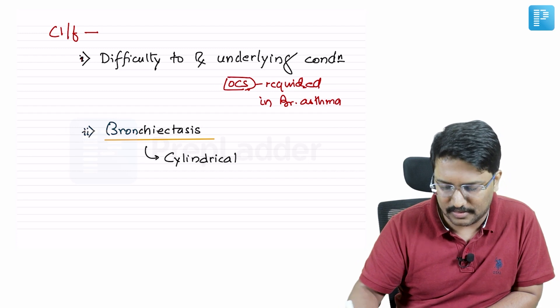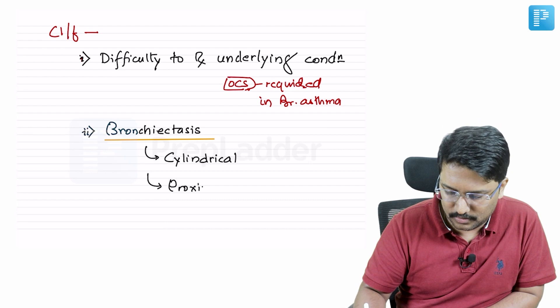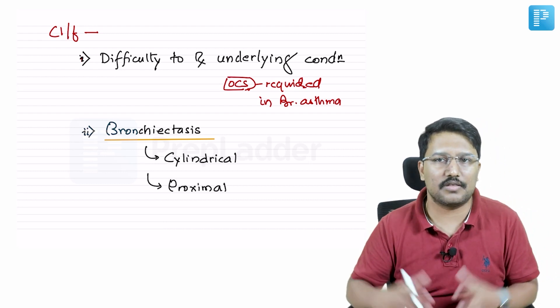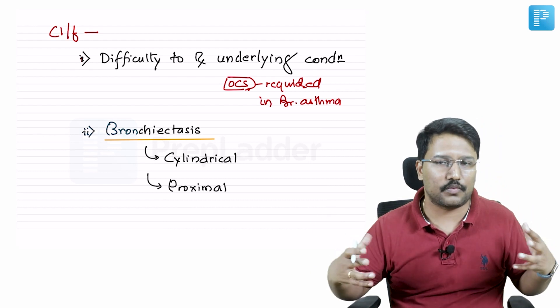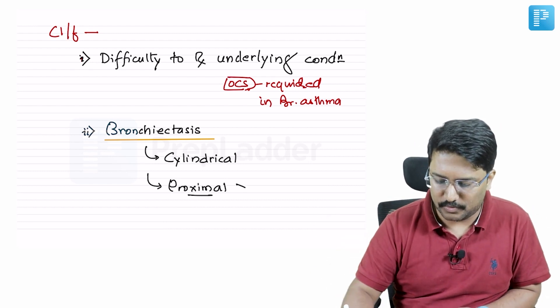It is mostly proximal or central more than peripheral. You do not see these bronchiectatic changes occurring towards the chest wall; it is more towards the hilum. Proximal more than peripheral.